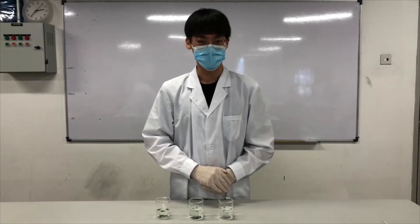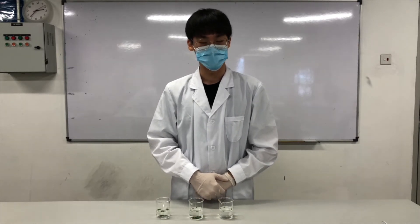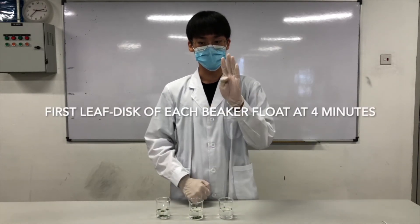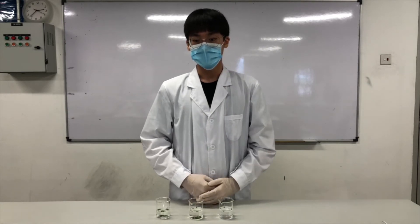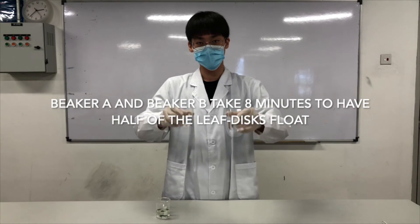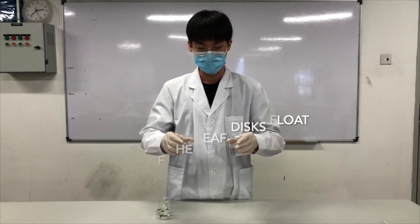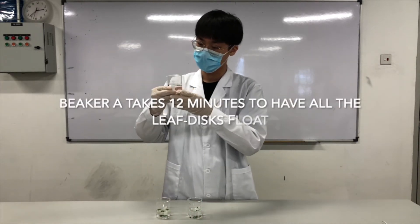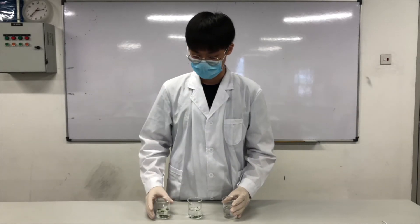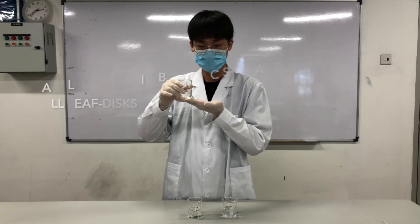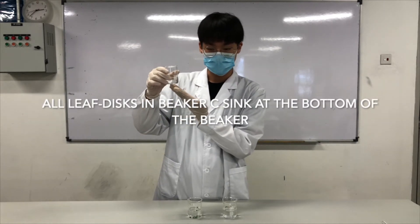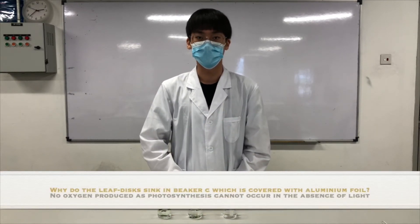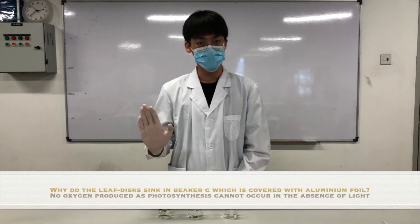Hello, this is Ivan and I will be explaining about the result of our experiment. The first leaf disk of each beaker will float at 4 minutes respectively. It will take 10 minutes for half of the leaf disks in beaker A and beaker B to float. Beaker A takes 12 minutes to have all the leaf disks to float. As for the beaker that is covered by the aluminum foil which is beaker C, all of the leaf disks is sink. This is because there is no photosynthesis can occur without light energy. Hence, there is no oxygen is produced.